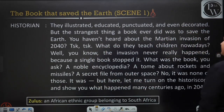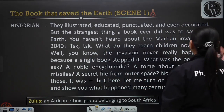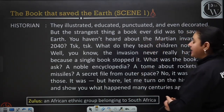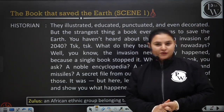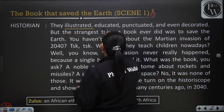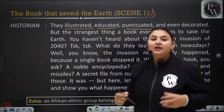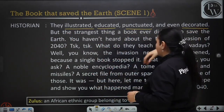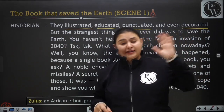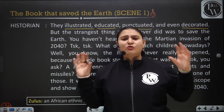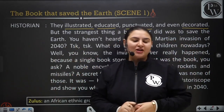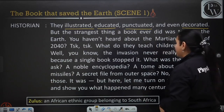Then the Historian says: they illustrated, educated, punctuated and even decorated. But the strangest thing a book ever did was to save the earth. She is telling about the importance of books — they gave illustrations, they educated, they were used for decoration. But the strangest thing any book has ever done was to save earth from Martian invasion.